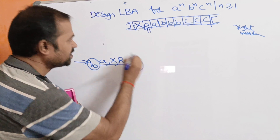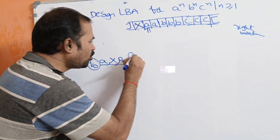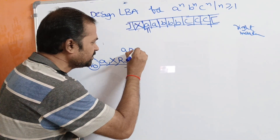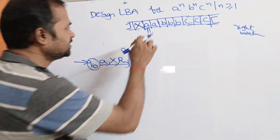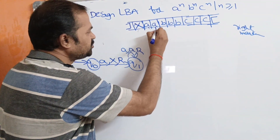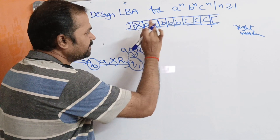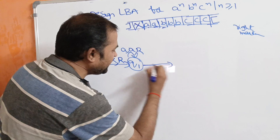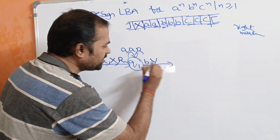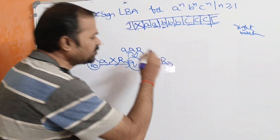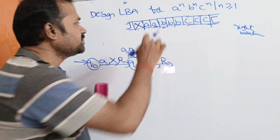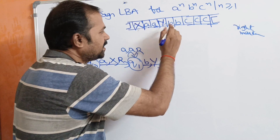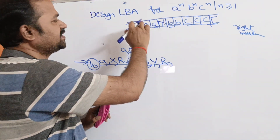On Q1, keep reading A's and moving right. When we reach B, if we read B on Q1, then replace B by Y and move the head towards the right. This Y is for the corresponding X. Now we are at Q2 state. On Q2, if we read any number of B's, there is no need to change B — just move the head towards the right. When we reach C, if we read C on Q2, then replace C by Z and move the head towards the left.